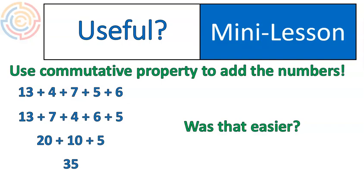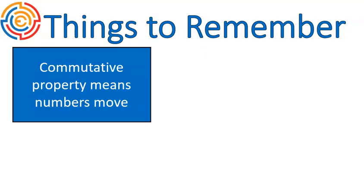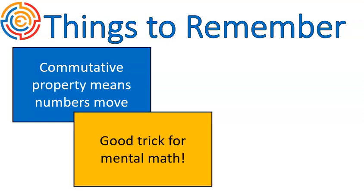Remember, you can commute numbers when you're adding and when you're multiplying. In fact, I think I'm getting ahead of myself. Commuting means to move numbers. The numbers stay the same. The operation stays the same. But you move the numbers. It's a great trick for mental math. And you can only do it with multiplication and with addition.